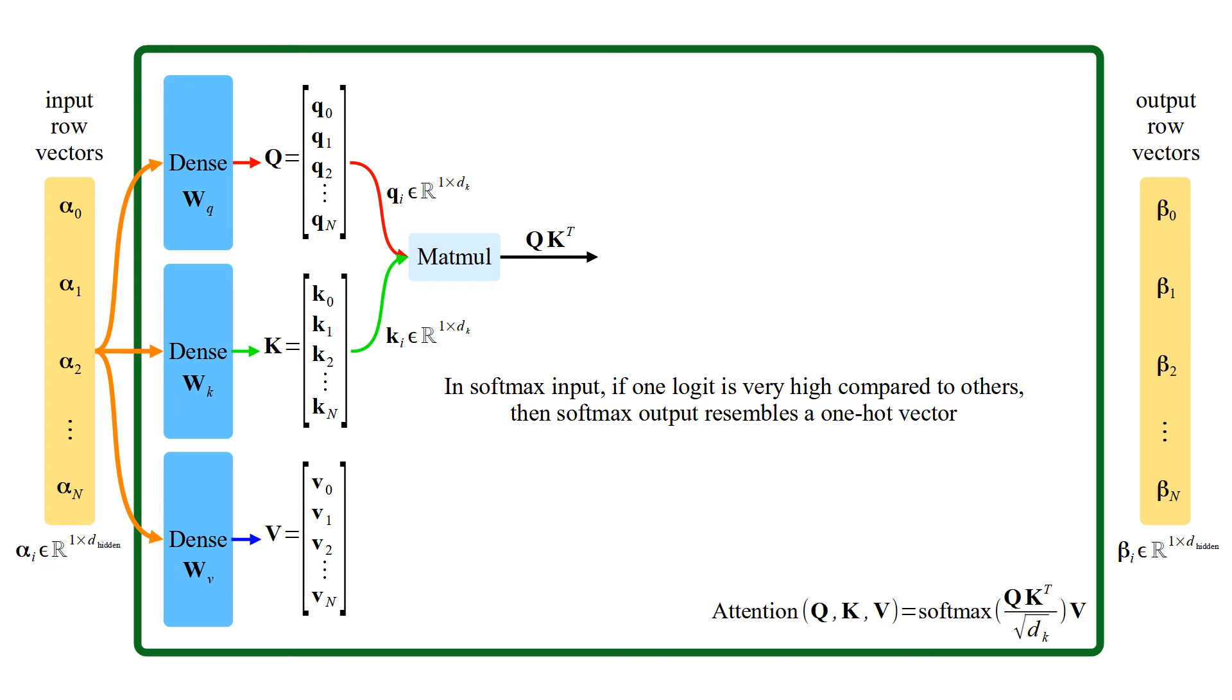In softmax input, if one logit is very high compared to others, then softmax output resembles a one-hot vector. If high output corresponds to ground-truth class, loss and gradient become very close to zero.